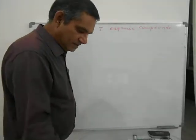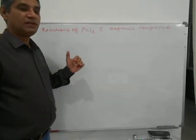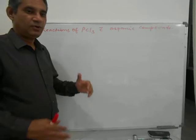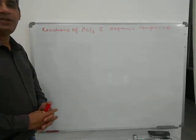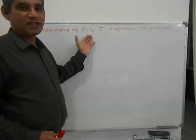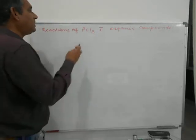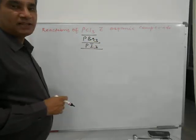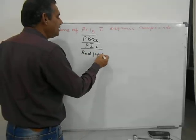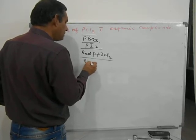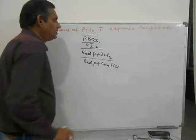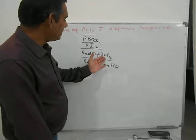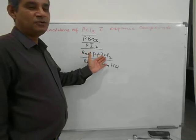Hello friends, in this topic we will be covering complete organic compound reactions with PCl3 — whatever compounds are there in organic chemistry, how those compounds will react with phosphorus trichloride. Not only PCl3, we can take PBr3 or PI3 also, or instead of PCl3 you can take red phosphorus plus 3Cl2, or red phosphorus plus concentrated HCl. You can also take red phosphorus plus 3Br2 or red phosphorus plus 3I2.